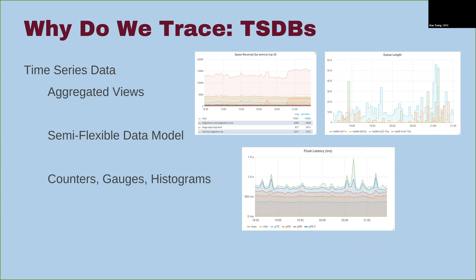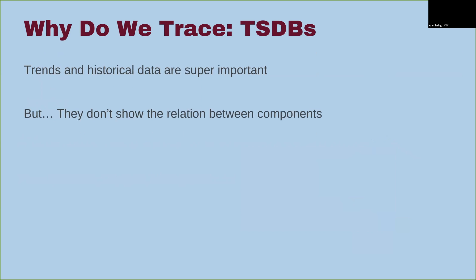This is in contrast to things like time series databases, where you see aggregate latency trends. The data model is kind of flexible — you have gauges, counters, and histograms — but you don't get the individual events. You don't see the full lifetime of requests there. You can observe that things happen, but you don't really know why they happen.